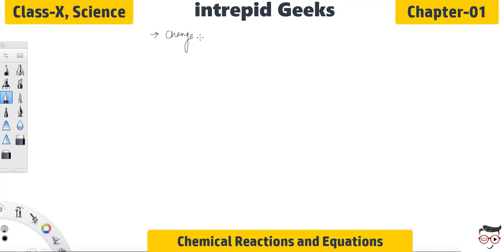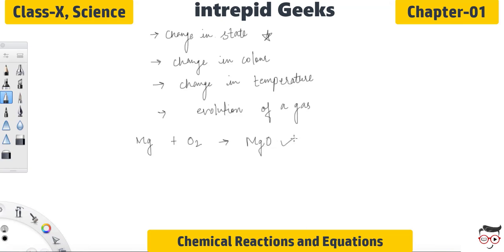The first thing is change in state. The second thing is change in color. Third thing is change in temperature. Fourth thing is evolution of a gas. So these are the four important things which you can notice through a chemical reaction. And if we want to write the chemical equation for the reaction which you have just seen through the video, the reaction would be Mg, that is magnesium, plus O2, that is oxygen, gives out MgO, that is magnesium oxide. So this is the chemical equation of the chemical reaction which you have seen.